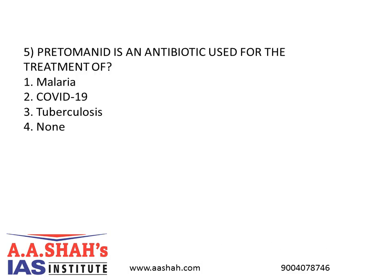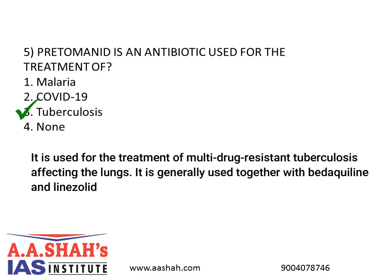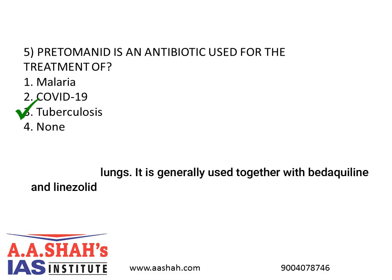5. Pretomanid is an antibiotic used for the treatment of? 1. Malaria. 2. COVID-19. 3. Tuberculosis. 4. None. Answer: 3. It is used for the treatment of multidrug-resistant tuberculosis affecting the lungs. It is generally used together with bedaquiline and linezolid.